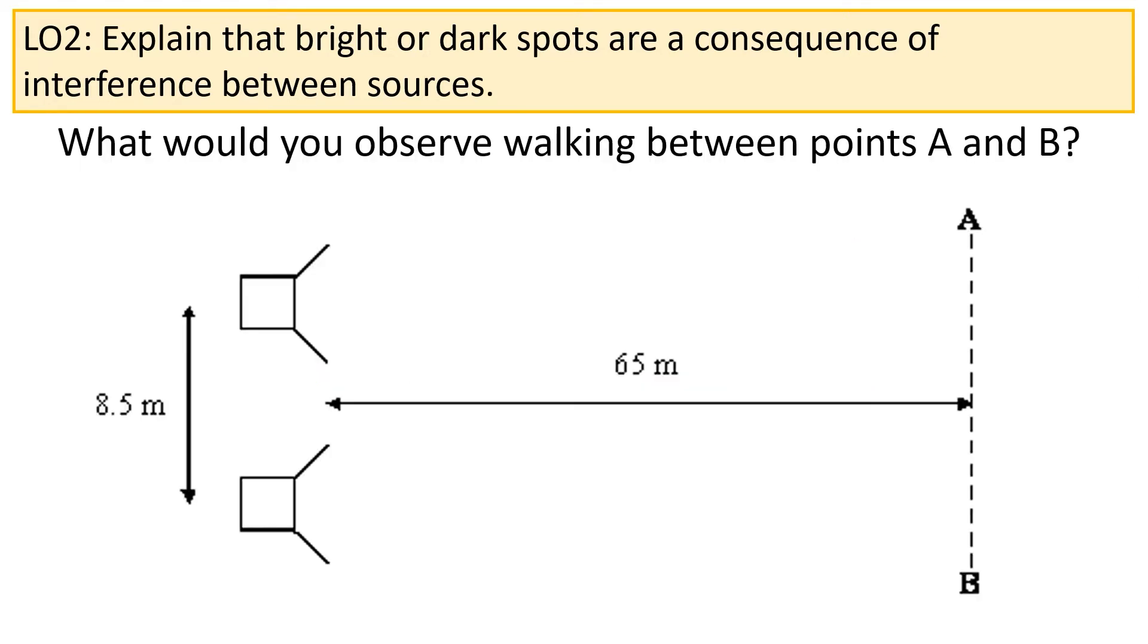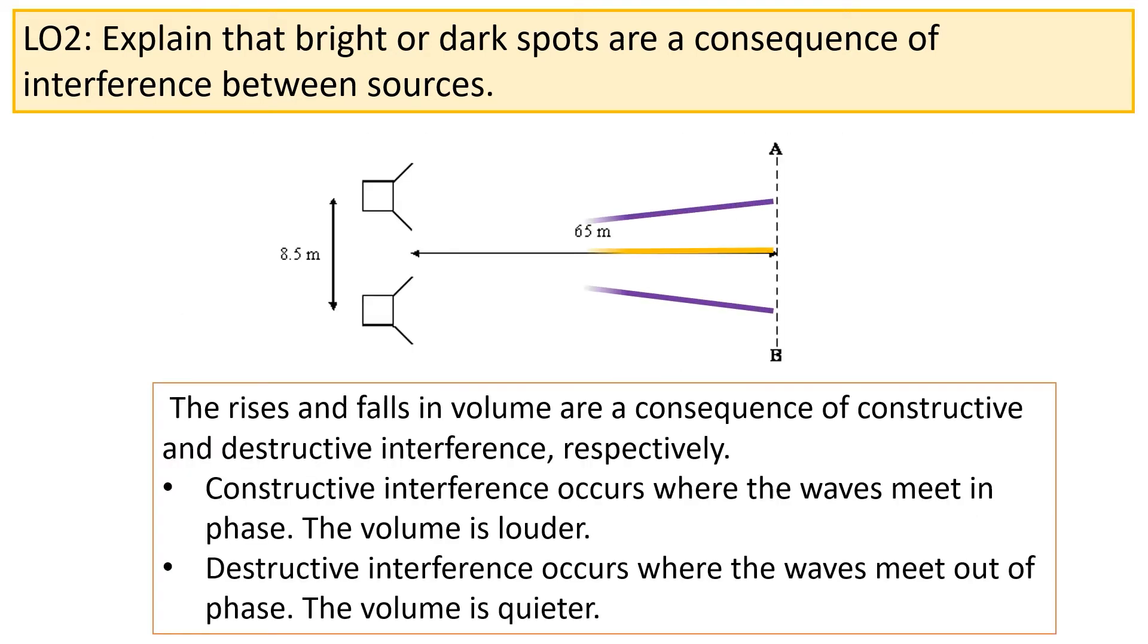Let's consider an example. You have two speakers producing the same sound wave set a certain distance apart. You then walk along a line from points A to point B. What do you imagine you would observe as you walk between point A and point B?